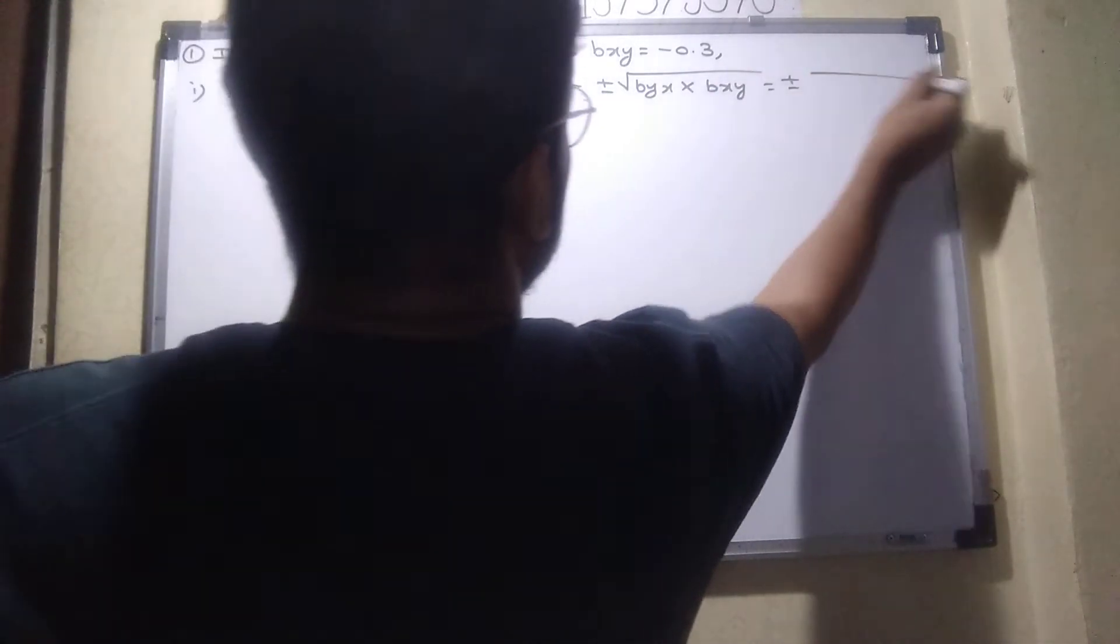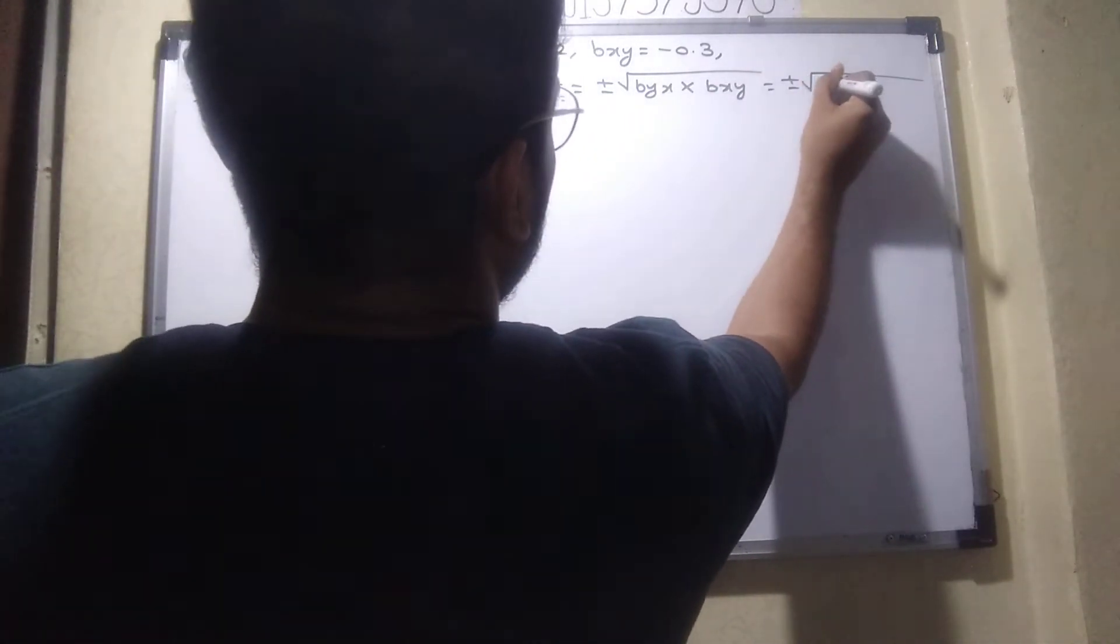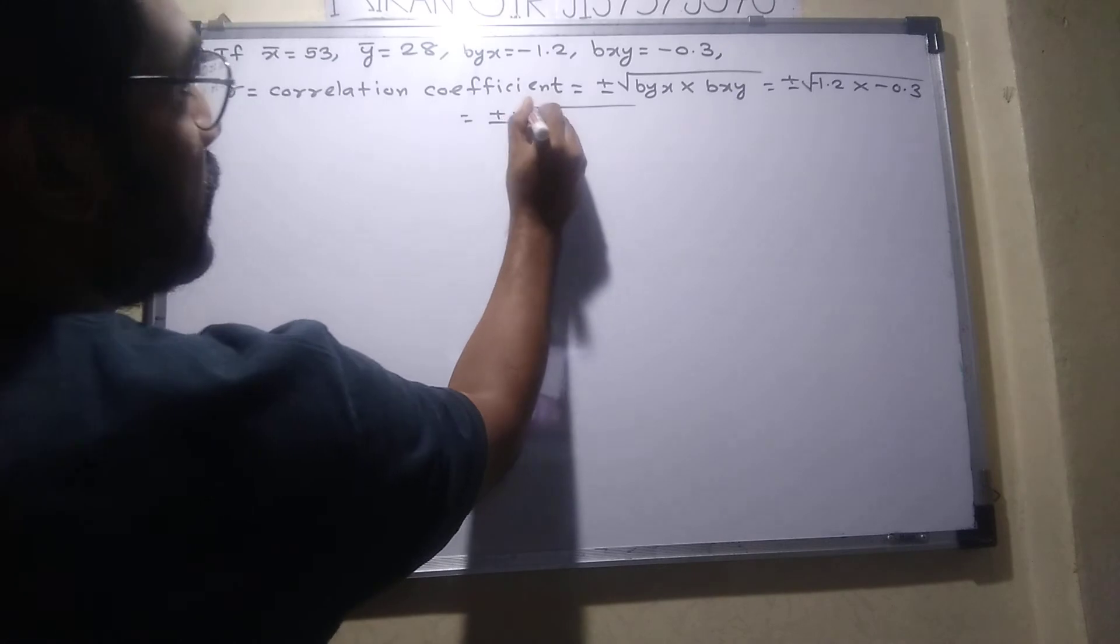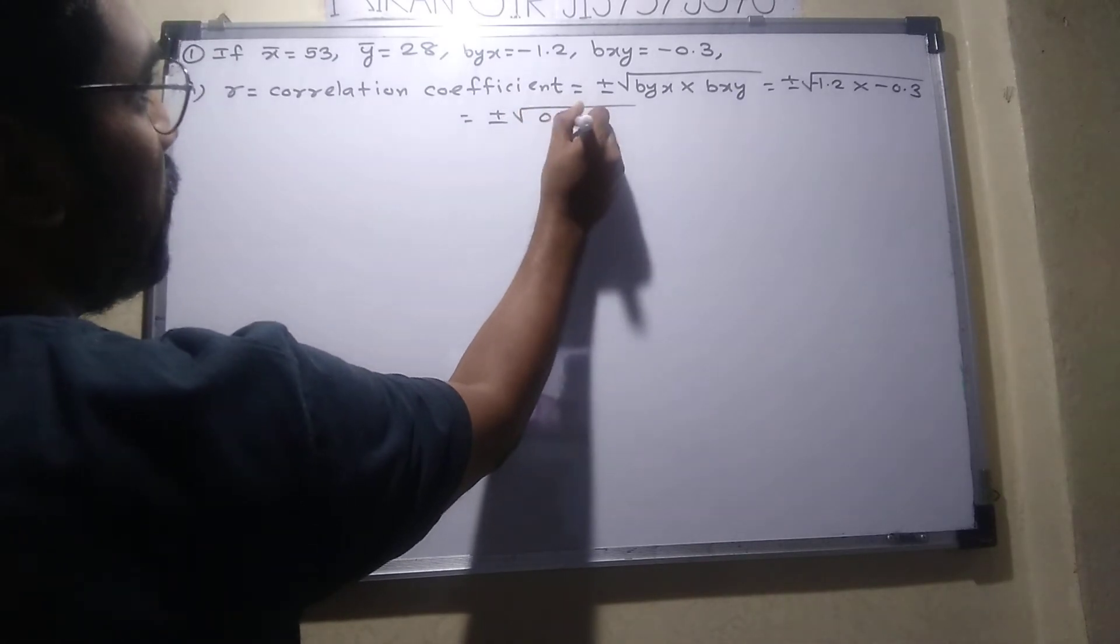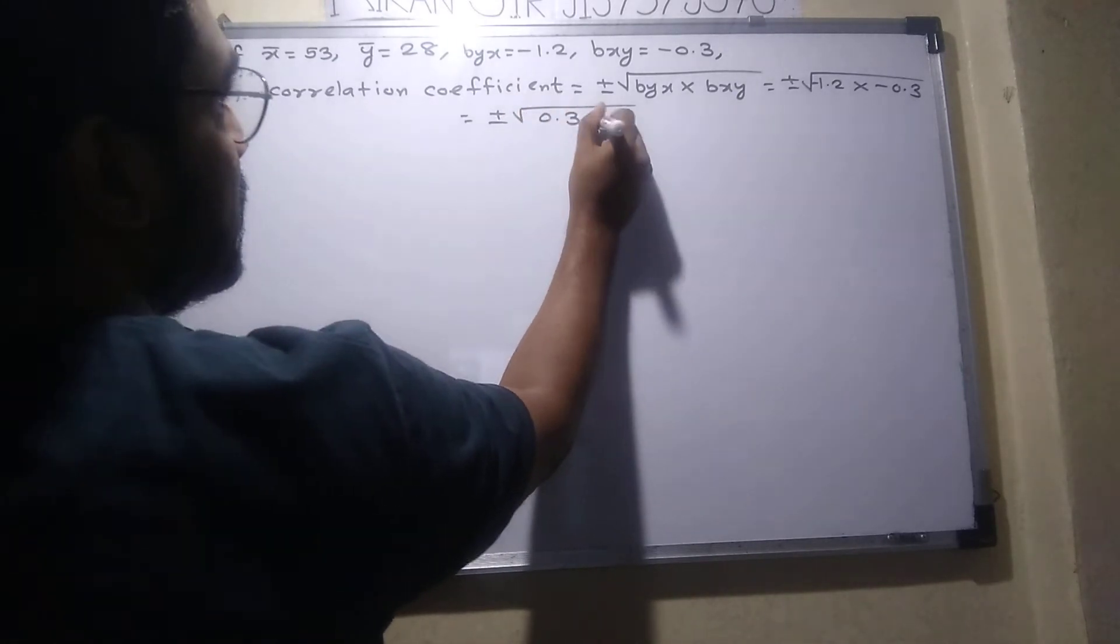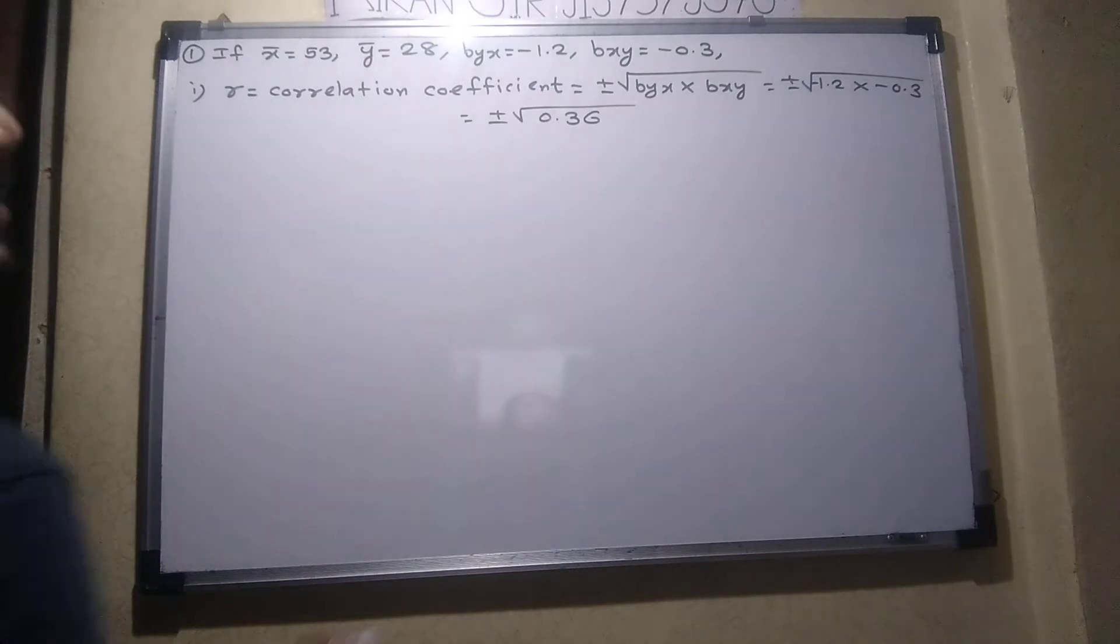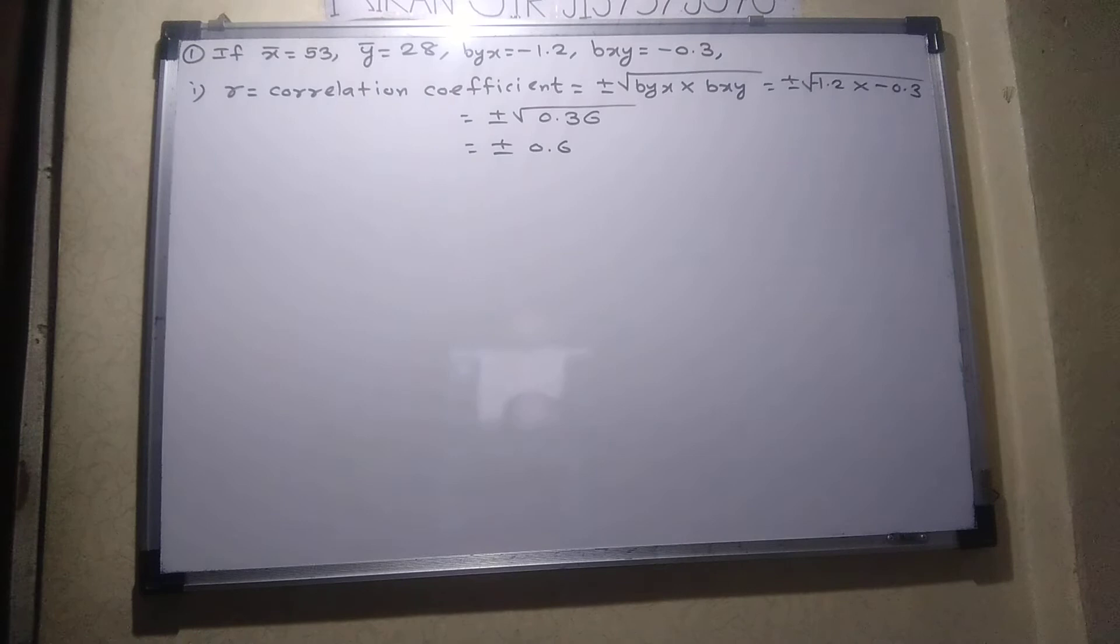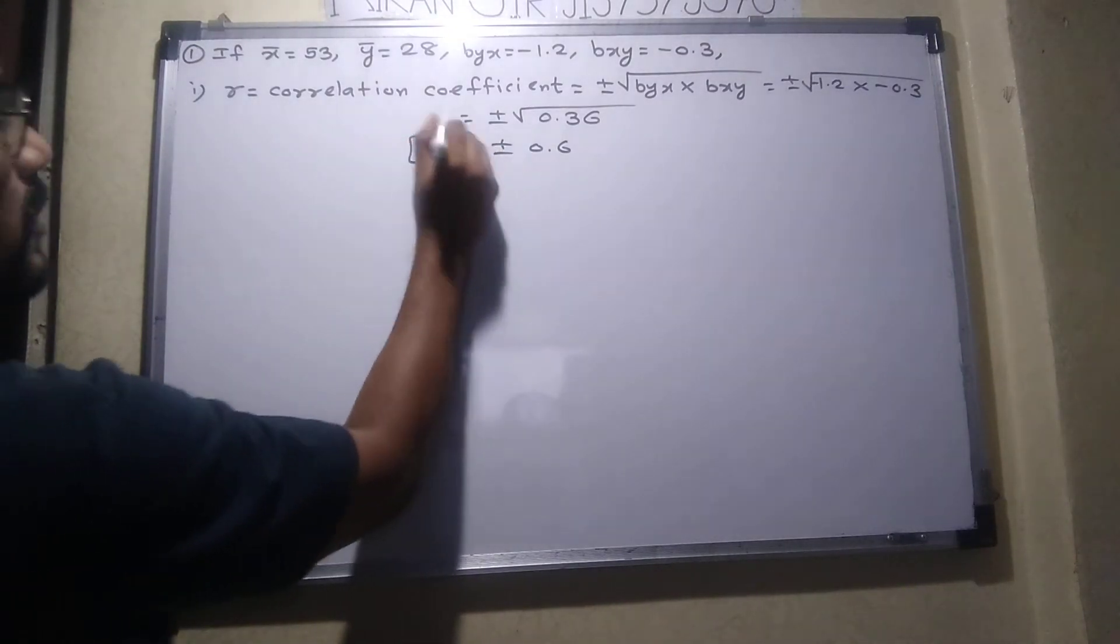Plus minus under root of minus 1.2 multiply by minus 0.3. Plus minus under root of 0.36, am I right? Minus minus is plus, so what is the answer? Plus minus 0.6. So what is the r value we got? Easy.